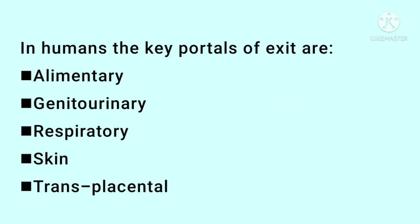If we are exposed to a pathogen, the pathogen must have a portal of exit. The alimentary route is the digestive tract. Genitourinary is the urinary route. Respiratory involves coughing and sneezing — respiratory secretions. Skin and transplacenta — through the placenta — are also portals of exit.